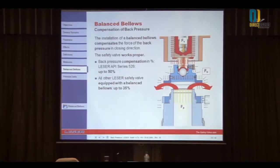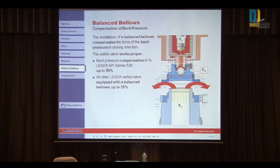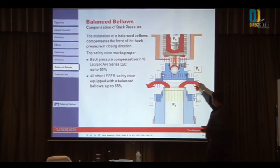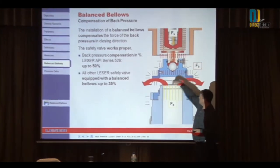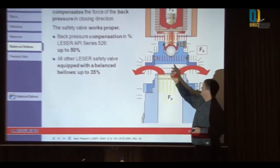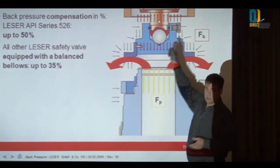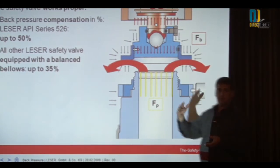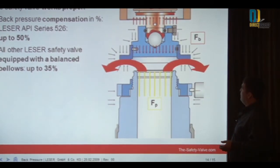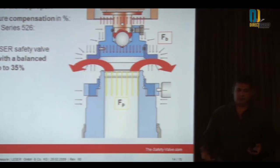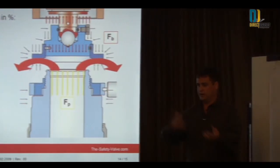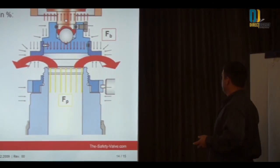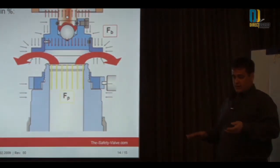When you put a balanced bellows in a valve, it compensates for back pressure because the diameter of the disc equals the bellows diameter pushing up, balancing the forces. This means you wouldn't have to set the valve at a different set pressure on a test bench compared to the system. It cancels the back pressure out completely.